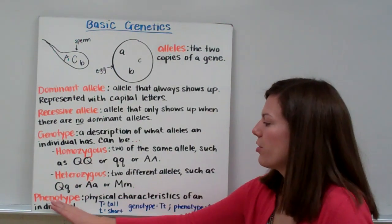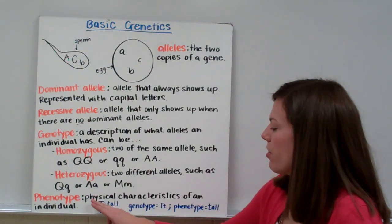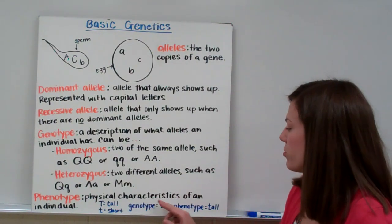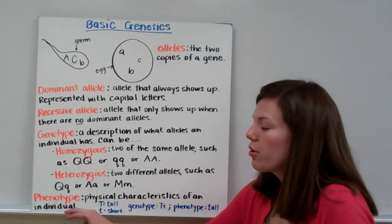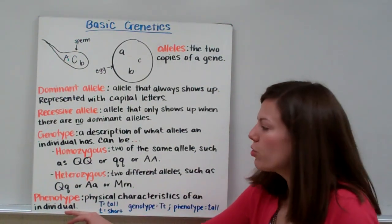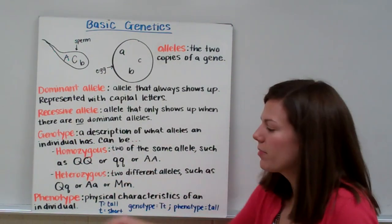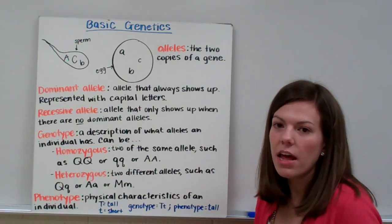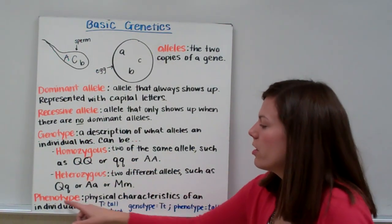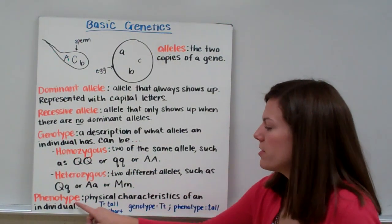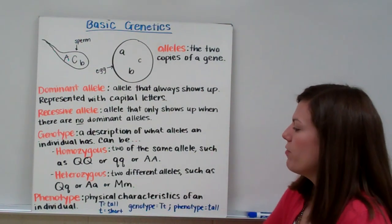What you look like is called your phenotype. Your phenotype refers to the physical characteristics of an individual, and it is controlled by your genes or your genotype. Whatever alleles you have controls your phenotype — your physical traits.